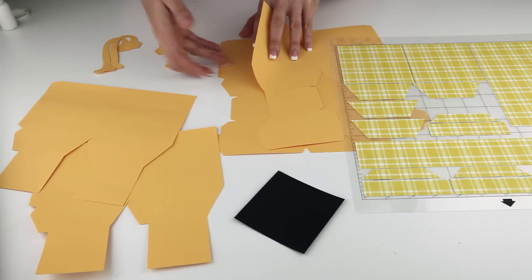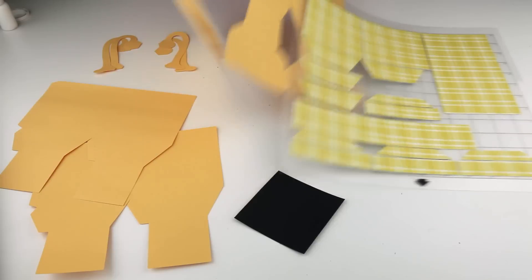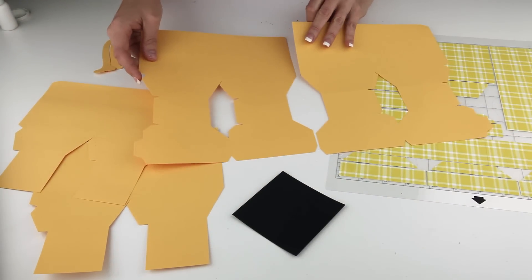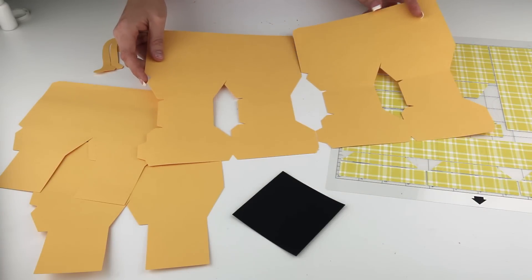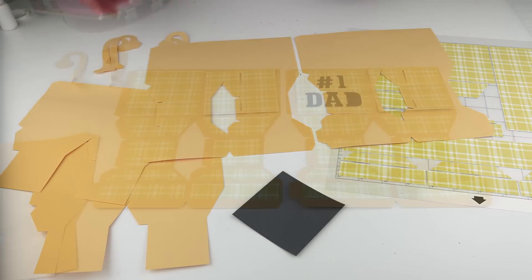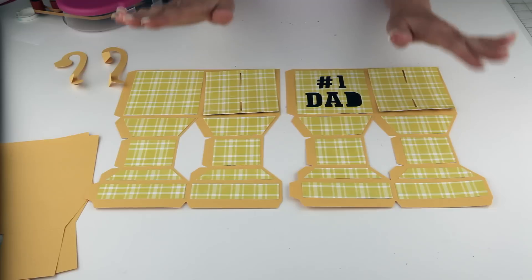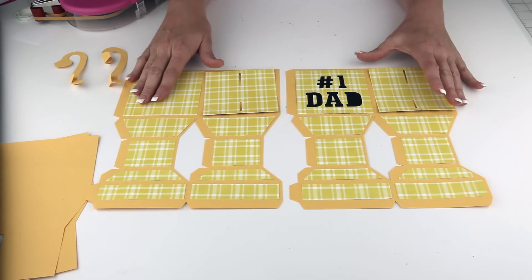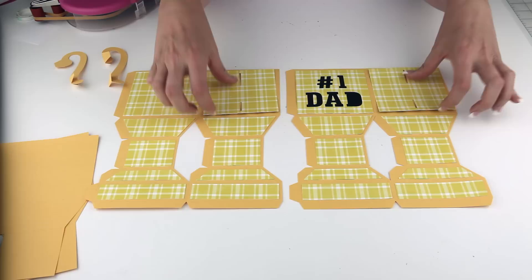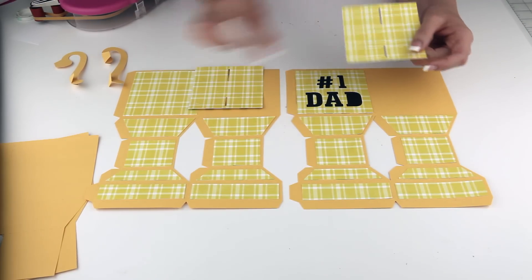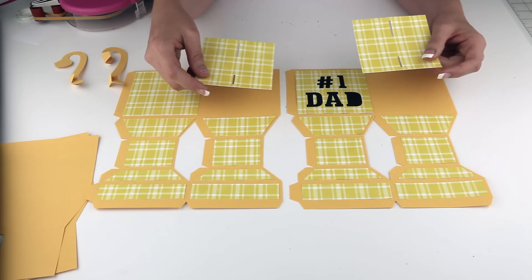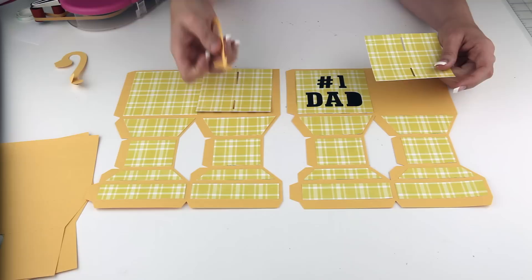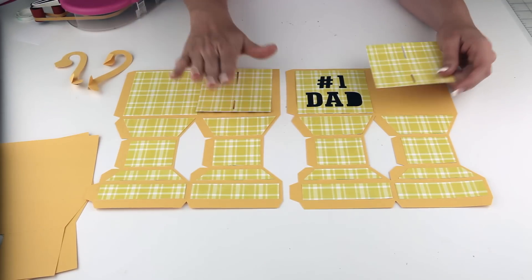I am actually going to adhere all of those covering panels to these two pieces right now before we get started. I will be back in just a moment. Now you can see I have adhered all of the covering panels to all of the sides of this trophy box except for these two. These are the two that have little slits in them so we can attach the handles.